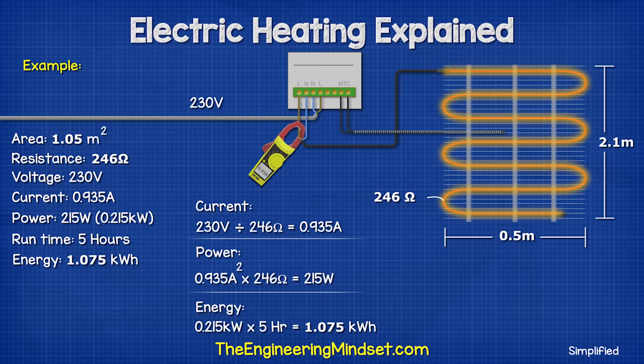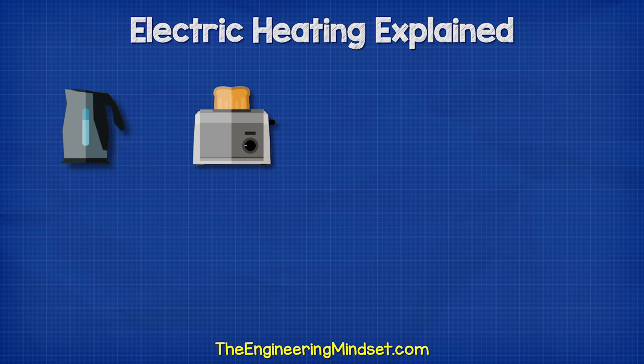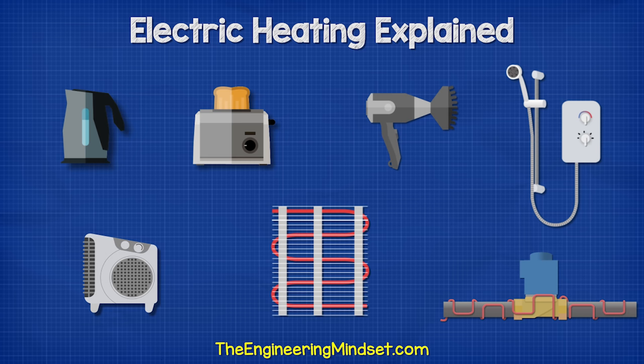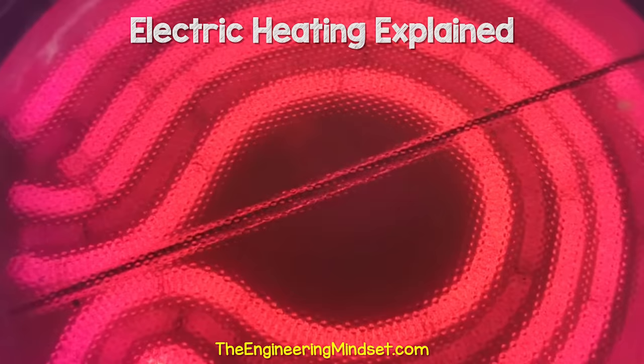Electric heating is used everywhere - from kettles, toasters, hair dryers, electric showers, fan heaters, underfloor heating, frost protection, and so many other applications. We'll have a look at the different types and how they work, but first - where have you seen electric heating used, and why? Let me know in the comments section down below.